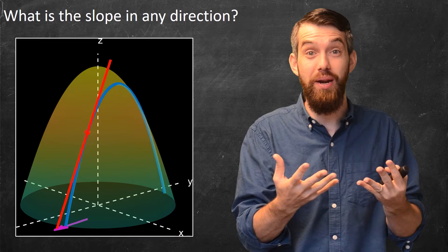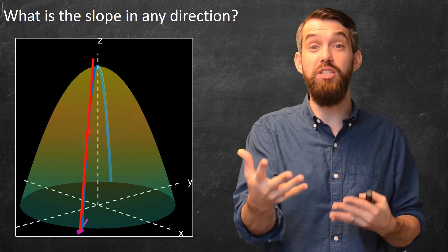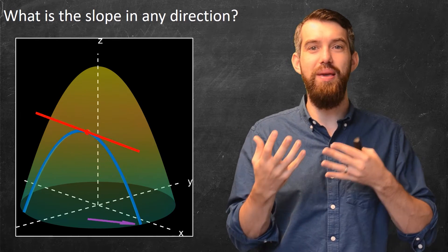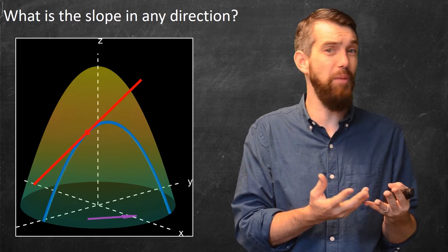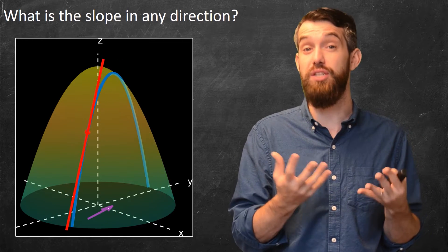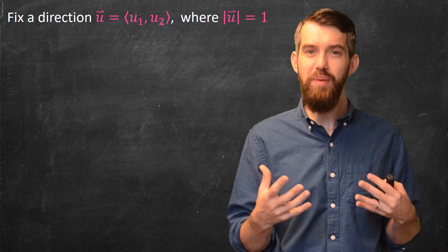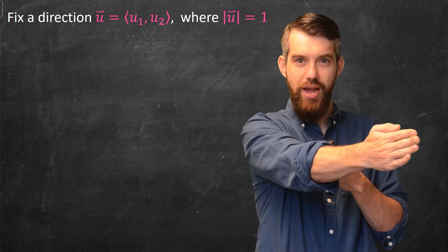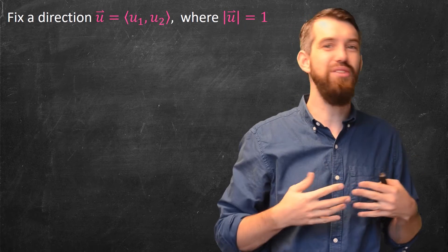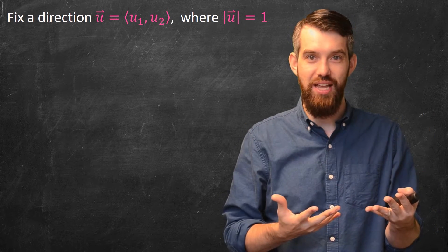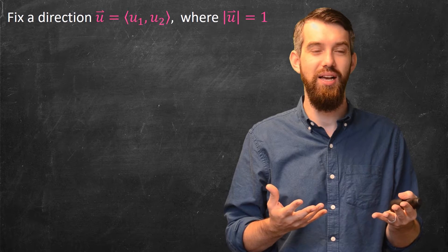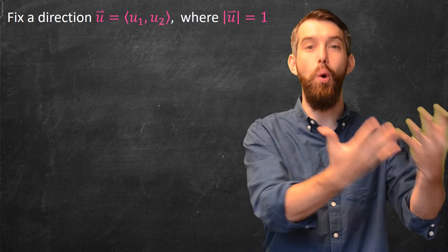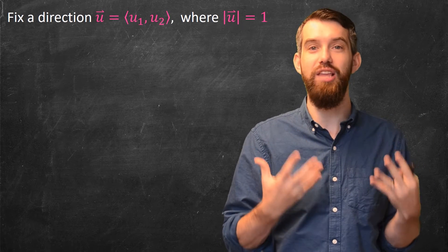That's the idea — but how do I come up with formulas to compute the directional derivative in a way that's easy, like the partial derivatives were? Let's begin with a fixed direction u with components u₁ and u₂. Because I do not care about the length, I'm going to demand that the length of u equals 1. The slope should not depend on how far I'm going in that direction, just the direction itself.